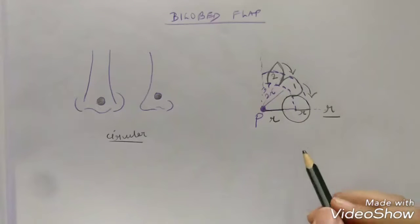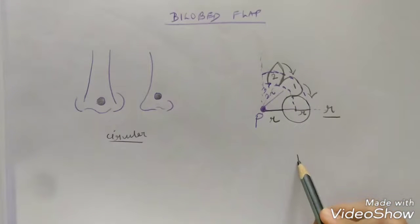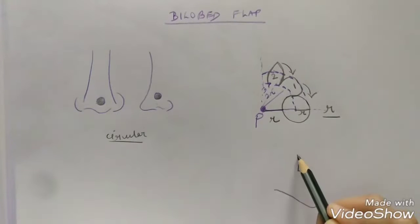What the suture line would be will be such that the second lobe is closed in a straight line, second lobe goes in the position of the first lobe and the first lobe goes in the position of the defect and extending up to the pivot point. So this will be the final suture line.